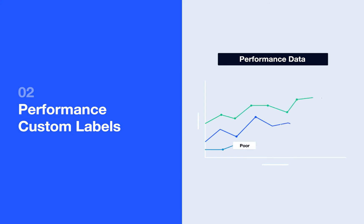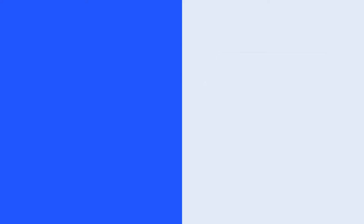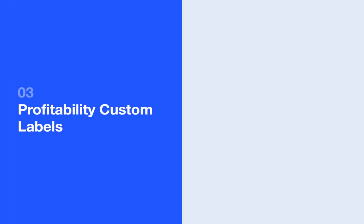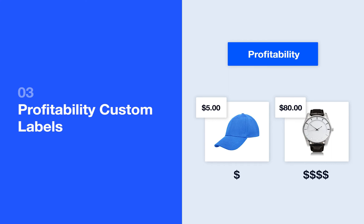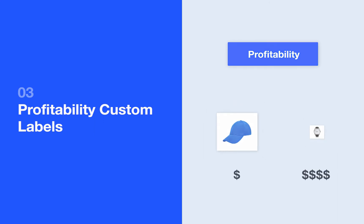Ideally, you'd want to incorporate your performance data from ads dynamically so that these metrics can be updated per product on an ongoing basis. If you know a product has a bigger profit margin, you can create a custom label to increase your bid and vice versa. For example, you may only make $5 in profit on the sale of a hat, but you might make $80 in profit on the sale of a nice watch. Using custom labels, you'd be able to segment your products and bid higher on ads for the watch than for the hat.